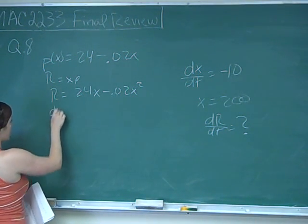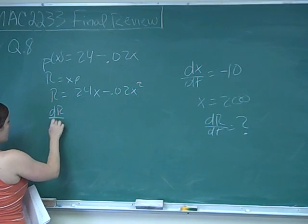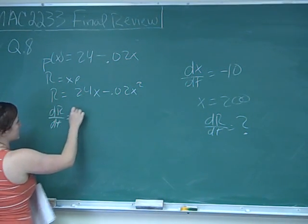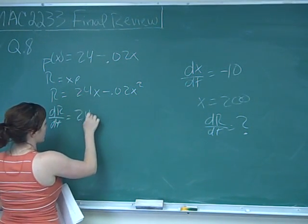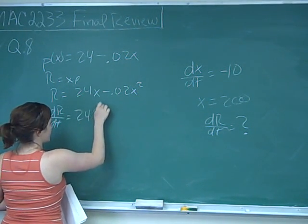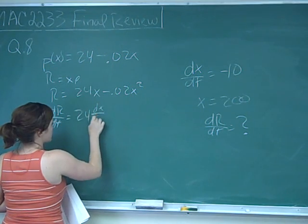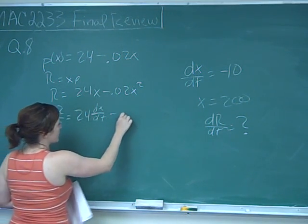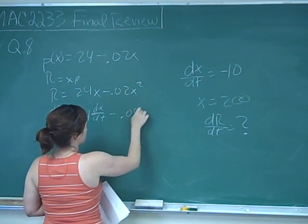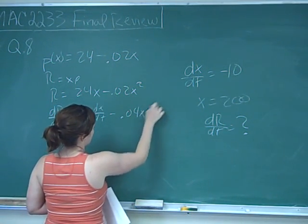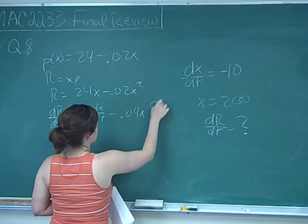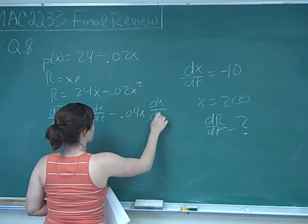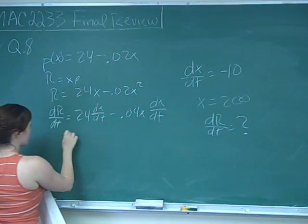Differentiating, we get dR over dT equals 24 times dX over dT minus 0.04X times dX over dT.